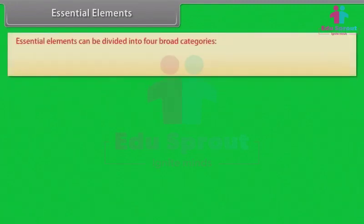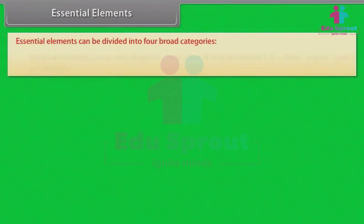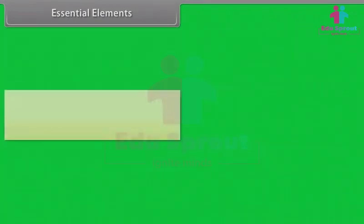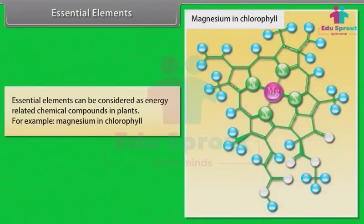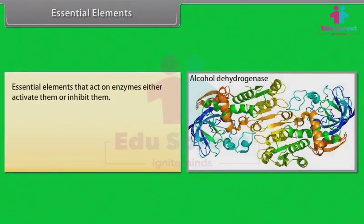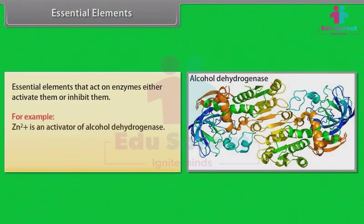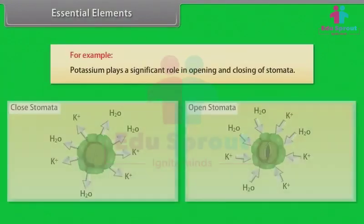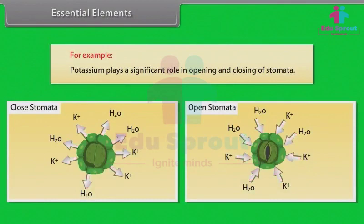Essential elements can be divided into four broad categories. They can be considered as components of biomolecules such as carbon, oxygen, hydrogen, and nitrogen. They can be energy-related chemical compounds in plants — for example, magnesium in chlorophyll. Some essential elements act on enzymes, either activating or inhibiting them — for example, Zn²⁺ is an activator of alcohol dehydrogenase. Some essential elements change the osmotic potential of a cell — for example, potassium plays a significant role in opening and closing of stomata.